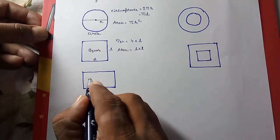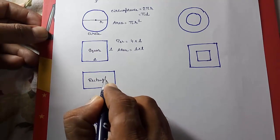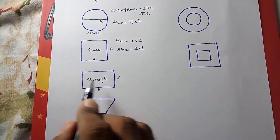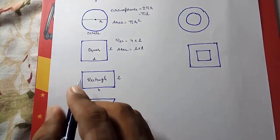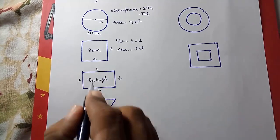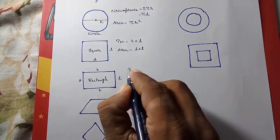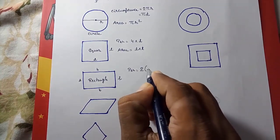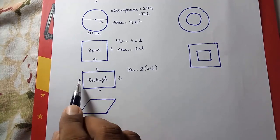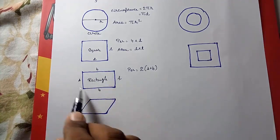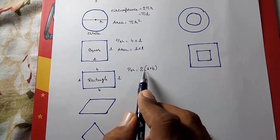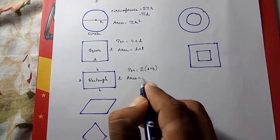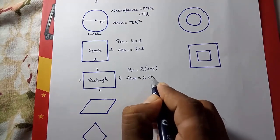This shape is a rectangle. Here length and breadth will be different. The opposite sides are equal, so this will be length and this will be length, and these will be equal to breadth. So if you want to find the perimeter of a rectangle it is 2 multiplied by (L + B). This comes from 2 lengths and 2 breadths — taking 2 as common gives 2(L + B). And if you want to find the area, it is length multiplied by breadth.